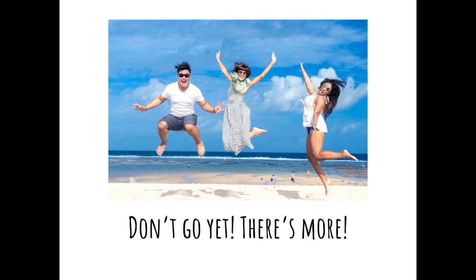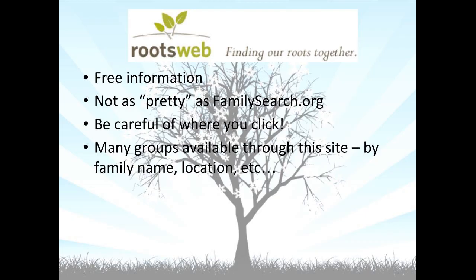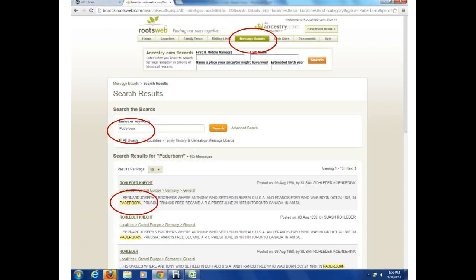The next source to explore is RootsWeb — another free information source. It is a user-based website, meaning the only information available is what users submit. It is not as user-friendly as some other sites, but it contains very useful information as well as message boards that can be used to find information overseas. There are pages dedicated to each state, county, and some family names. The downside to RootsWeb is that there can be ads on the pages, so be careful where you click and read before you click. I did a sample search using message boards for the town of Paderborn, Germany, where some of my family came from — people post a city name and surname to find information on a family from that area, and many people worldwide are very willing to share.